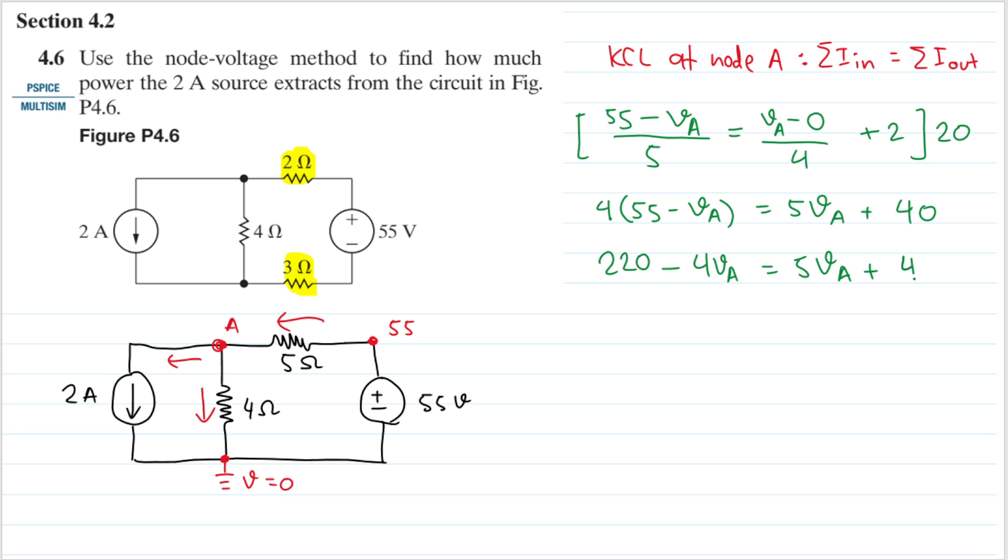Plus 4 VA. So 220 minus 40 will be 180, and on the right hand side I will have 9 VA. So we'll have VA is equal to 20 volts.